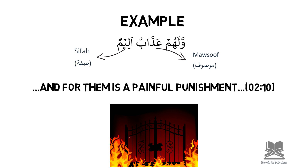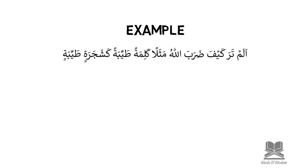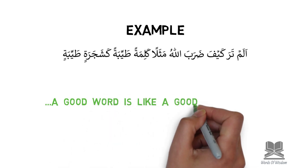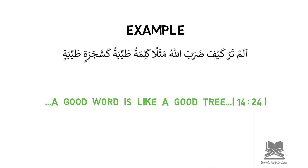I will share one final example from Surah Ibrahim, surah number 14, ayah 24, which contains two examples of musuf sifa in a single ayah. Allah subhanahu wa ta'ala says: have you not seen how Allah sets forth a good word — 'kalimatan tayyibatan' — like a good tree — 'ka shajaratin tayyibatin'. Here the word is being described as good, and the tree is also being described as good.